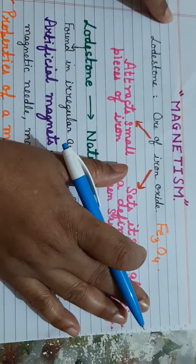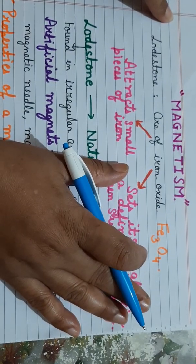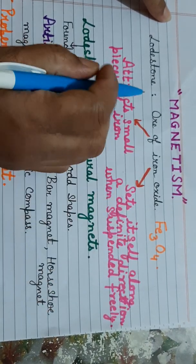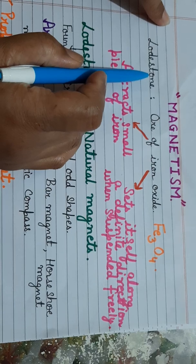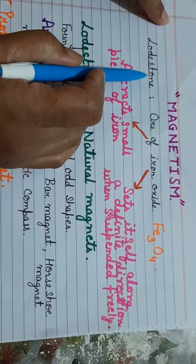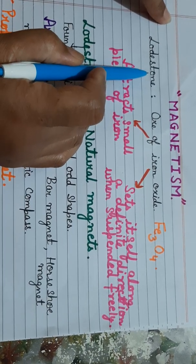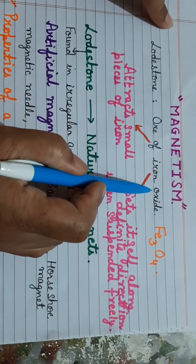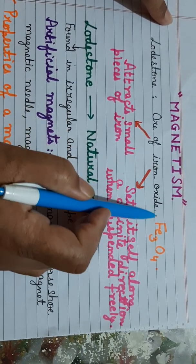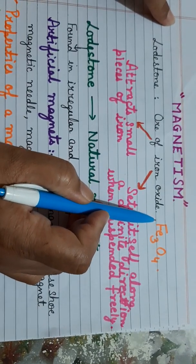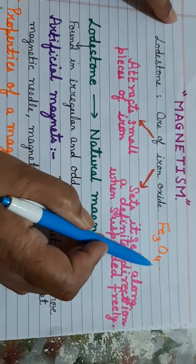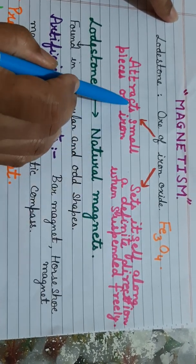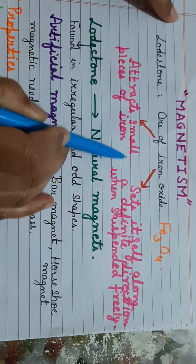We all know that magnets are naturally found under the earth's crust and naturally occurring magnets are known as lodestones. A lodestone is an ore of iron oxide and the chemical formula of iron oxide is Fe3O4. It is found under the earth's crust and there are two main properties of a natural magnet.